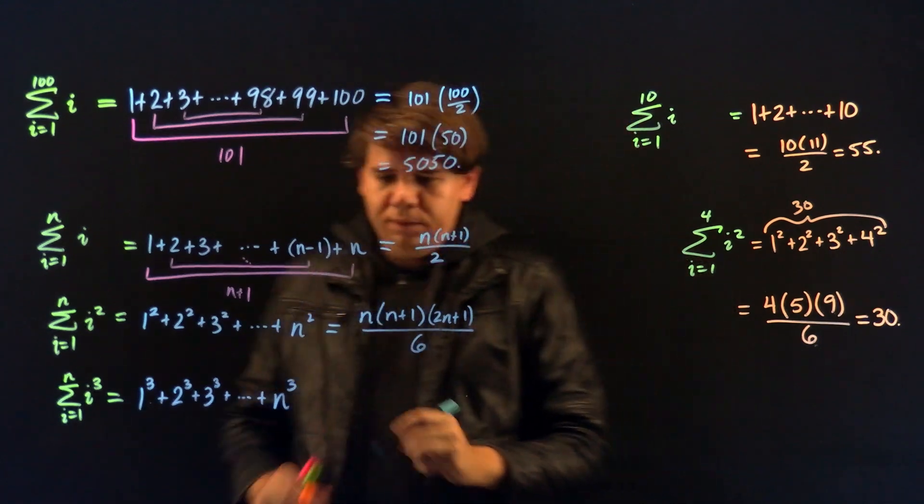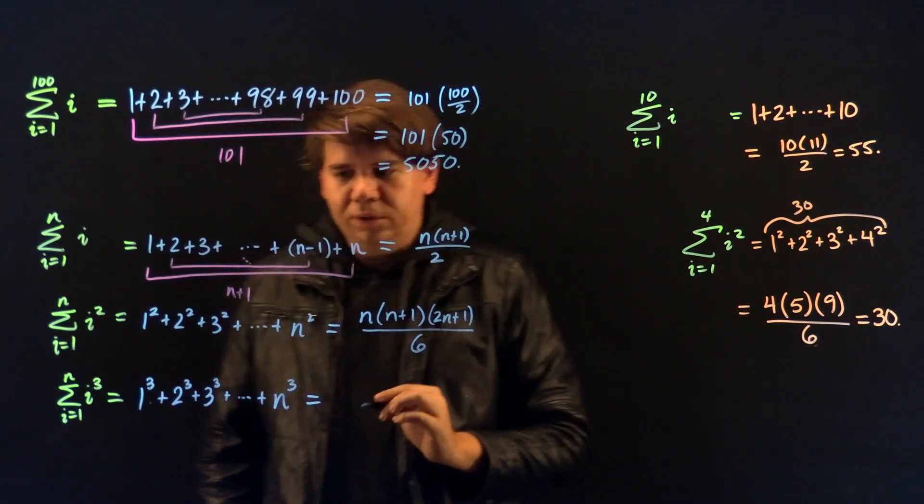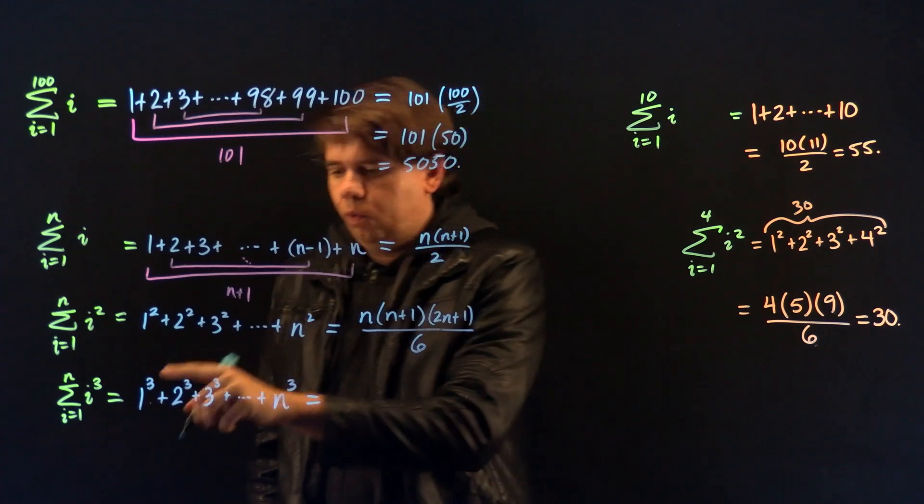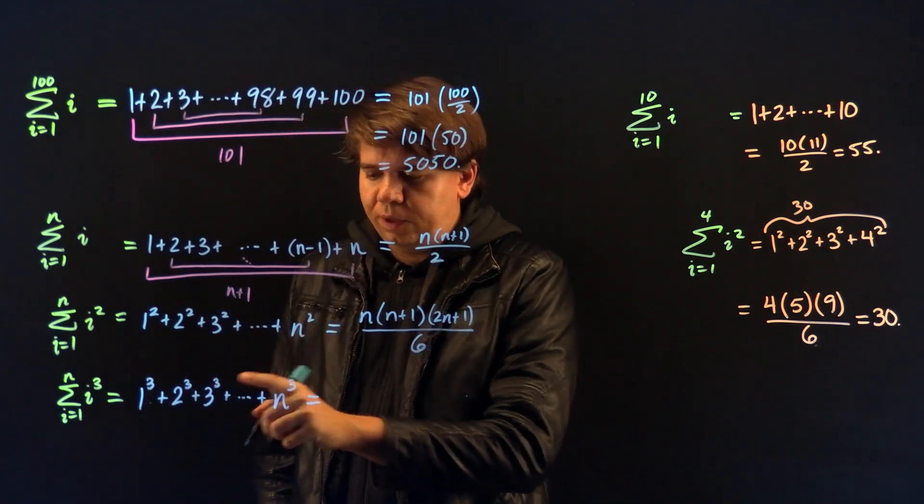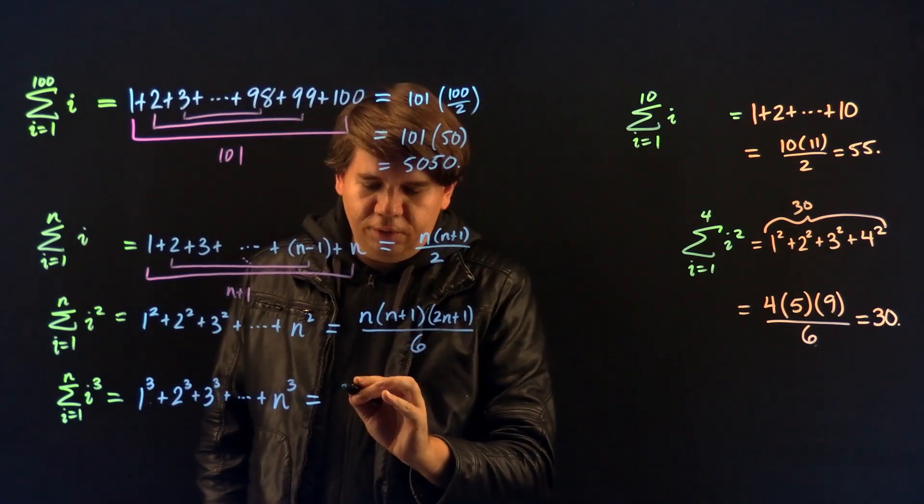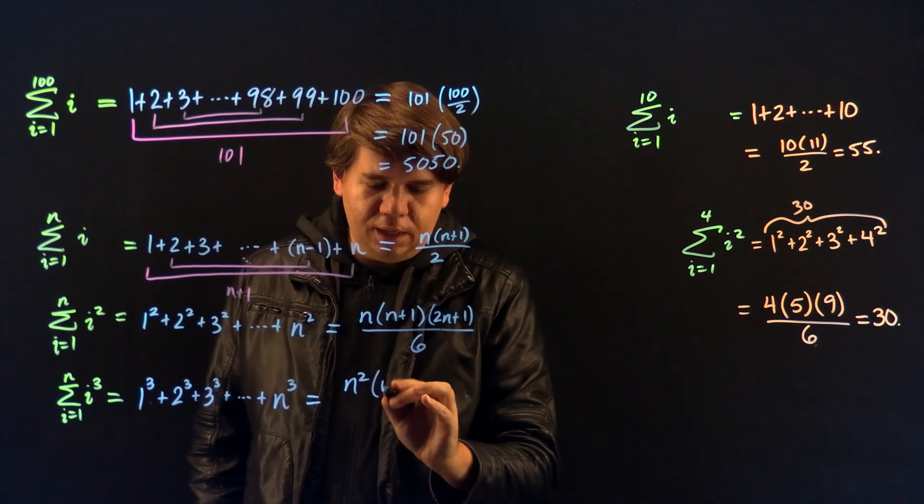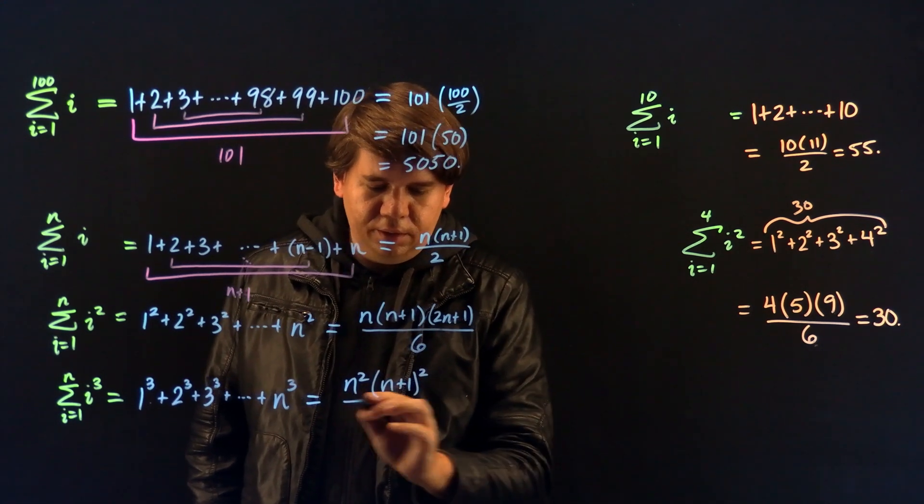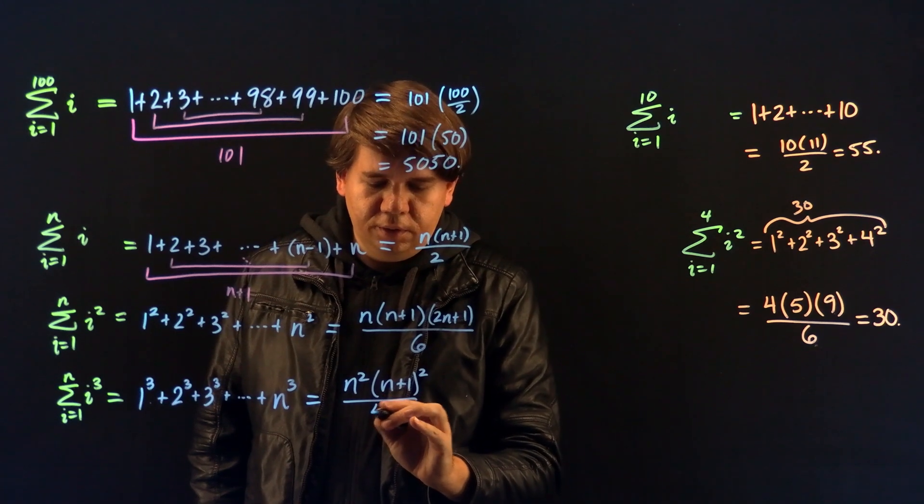Likewise, there's also a formula for summing up the numbers, 1 cubed plus 2 cubed plus 3 cubed, all the way up to n cubed, where the formula here is just n squared times n plus 1 squared, all over 4.